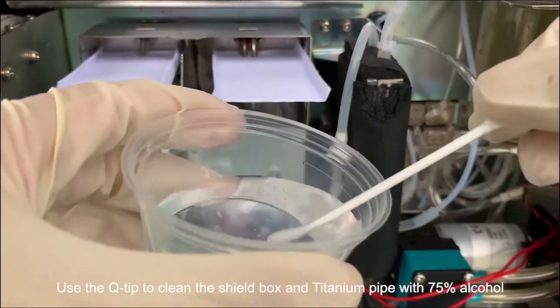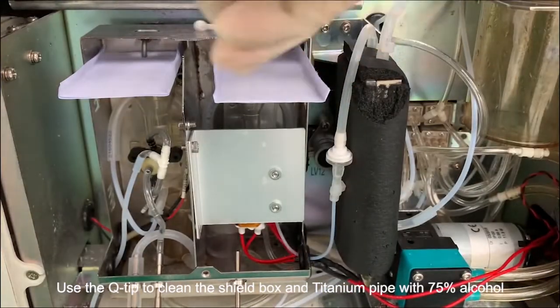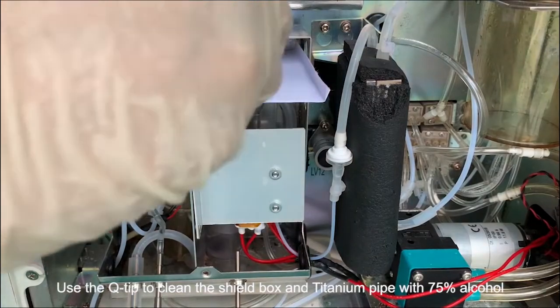Use the q-tip to clean the shield box and titanium pipe with 75% alcohol.